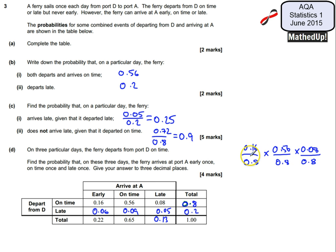However, we've not finished because that's just one particular order. That's early, so the first day it's early, the second day it's on time, and on the third day it's late. But it could be that it's early on the first day, late on the second day, and on time on the third day. So that would give me the same calculation but in a different order.